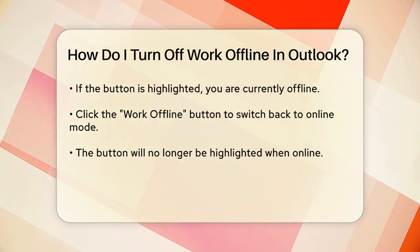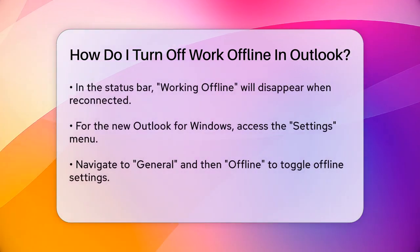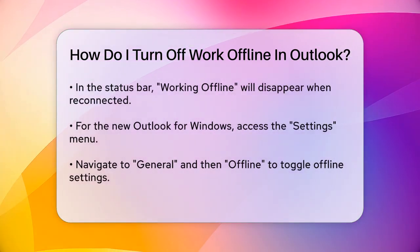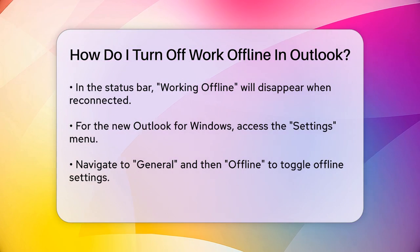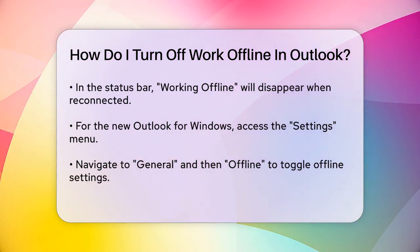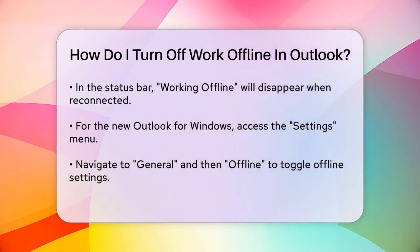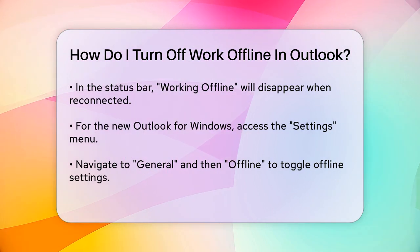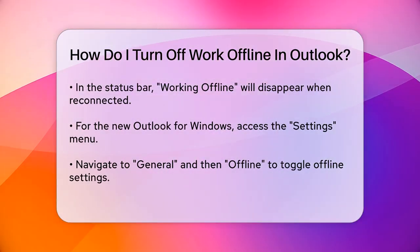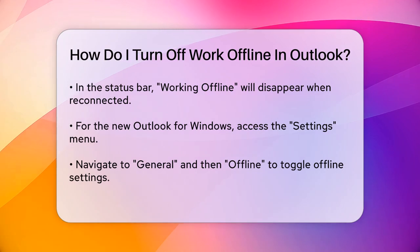If you're using the new Outlook for Windows, the process is similar but slightly different. You need to go to the Settings menu, then select General, and finally Offline. Here you'll find the toggle to enable offline email, calendar, and people. Make sure this toggle is turned off to switch back to online mode.